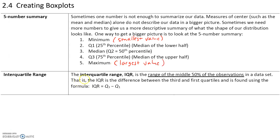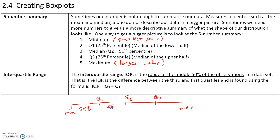We also need to know the definition of the interquartile range, or IQR. The IQR is the middle 50% of the observations. If we divide our data into four 25% sections — minimum, Q1, Q2, Q3, and maximum — the middle 50% is between the first and third quartile. Therefore, the interquartile range is the difference between the third and first quartiles: IQR = Q3 minus Q1.